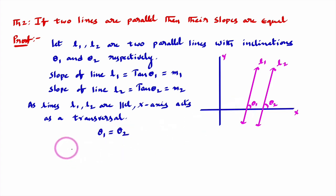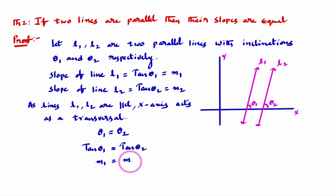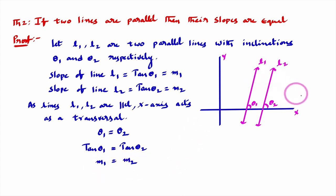Applying tan to both sides: tan θ1 equals tan θ2. Since tan θ1 is the slope of the first line and tan θ2 is the slope of the second line, we get M1 equals M2. So if two lines are parallel, their slopes are equal. From now onwards in this chapter on straight lines, whenever two lines are parallel, we will consider their slopes to be equal.